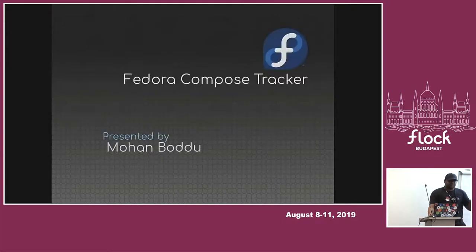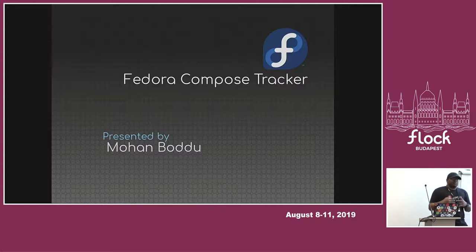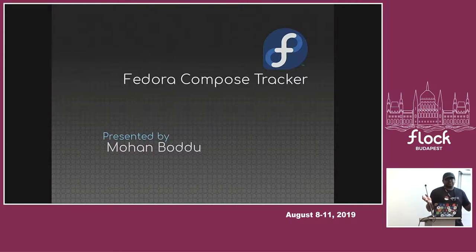That's where we are introducing Fedora Compose Tracker, where it will track each and every compose run, ping people about if the failure is related to their image, and then do some tracking — from which we can make it a policy where we let people know that their image has been failing for the last month, and if you don't fix it, in another month we will remove it from Fedora.